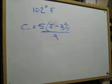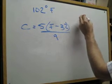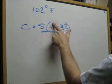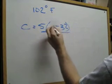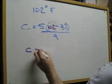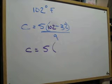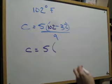All right, so let's go ahead and do that. We're going to put, instead of the F, we're going to put 102 in there. Let me just put that in there, a different color. And we're going to solve it. Remember, PEMDAS, we're going to do what's in the parentheses first. 102 minus 32 is going to give us 70.